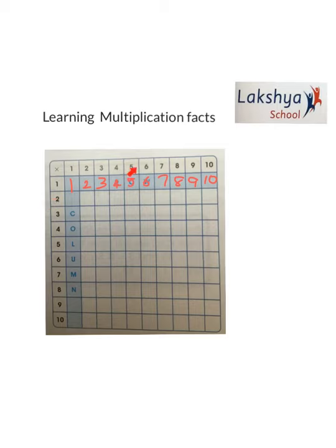Now we'll take the second number, that is 2. We need to multiply 2 with all these numbers: two ones are 2, two twos are 4, two threes are 6, two fours are 8, two fives are 10, two sixes are 12, two sevens are 14, two eights are 16, two nines are 18, and two tens are 20. We have completed the second row. Similarly, we need to complete rows three through ten.